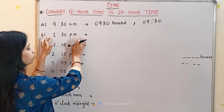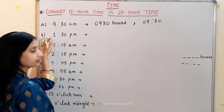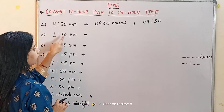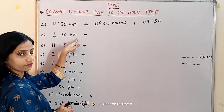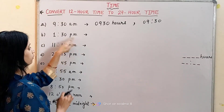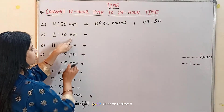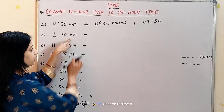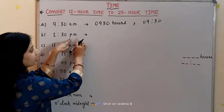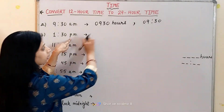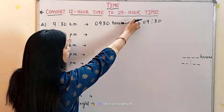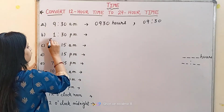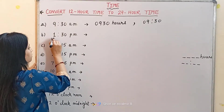Now let's move on to the second example. It is 1:30 PM. So here there will be one change — it is PM, which means whenever we have to write the time in 24-hour format, we will add 12 to the hours.